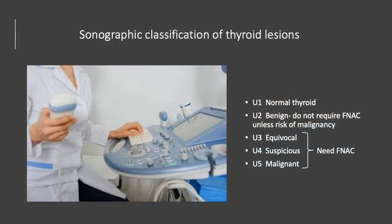The British Thyroid Association guidelines classify sonographic features as follows: U1 indicates a normal thyroid; U2 indicates benign — U2 lesions do not require FNAC unless there are suspicious clinical features or risk factors for thyroid cancer; U3 lesions are equivocal; U4 lesions are suspicious; and U5 lesions are malignant. U3, U4, and U5 lesions require FNAC.